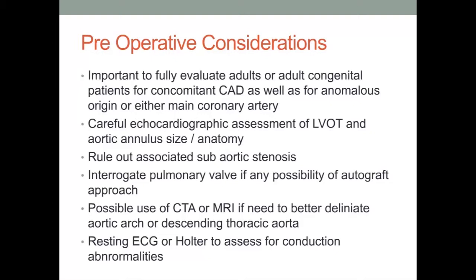Echocardiographic evaluation can allow for better recognition of potential post-stenotic ascending aortic dilation as well as a thorough investigation of pulmonary valve architecture for consideration of autograft use. Mitral valve architecture and the degree of potential insufficiency should be noted as this may be altered following aortic root enlargement. Adult congenital patients in particular who may have a history of associated arch anomalies may require a CT or MRI scan to ensure anatomic anomalies are well defined. Finally, a resting ECG should be ordered and reviewed to evaluate for any preoperative signs of atrial-level dysrhythmia which may be addressed at time of surgical intervention.